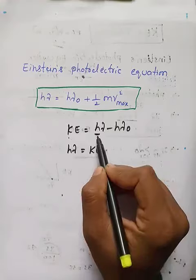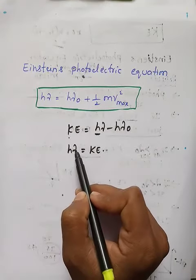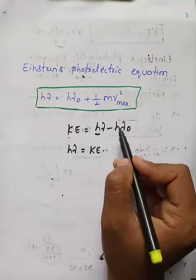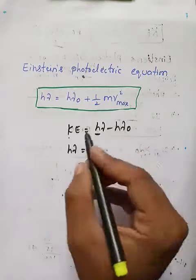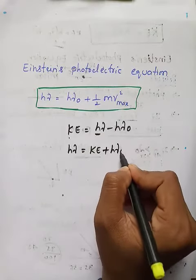Kinetic energy is h nu minus h nu naught. Therefore, this h nu naught is going to the left side. It becomes kinetic energy plus h nu naught on the left side.